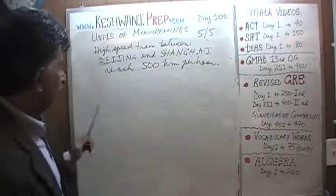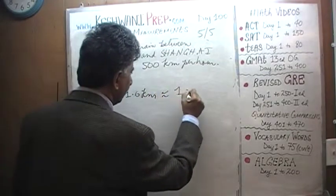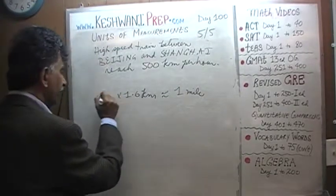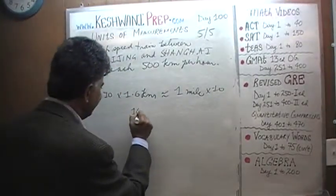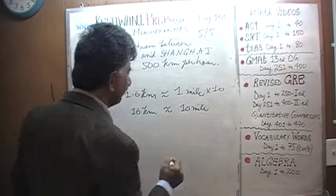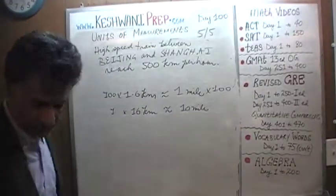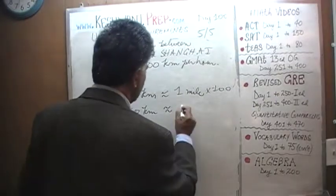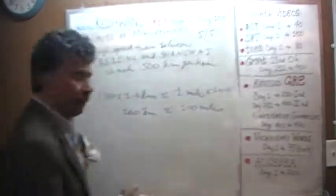We learned on day number 96 that 1.6 kilometers is about 1 mile. We learned that. We have to know this by heart. This basic fact we have to know by heart. Therefore, if you multiply both sides by 10, that tells us that 16 kilometers is about 10 miles. Let's multiply it by 100. And that tells us that 160 kilometers is about 100 miles.